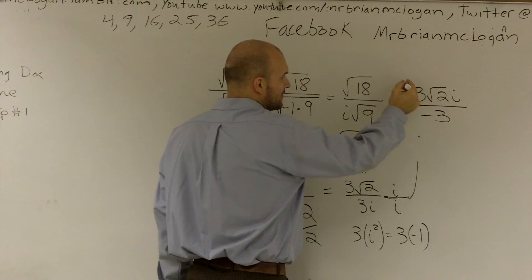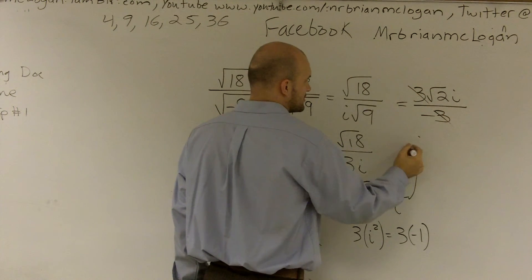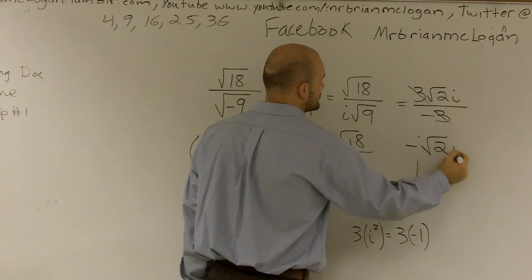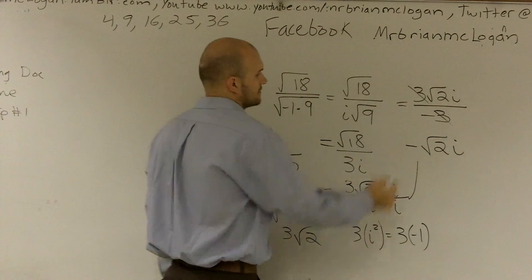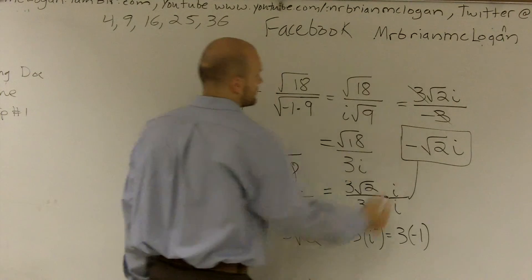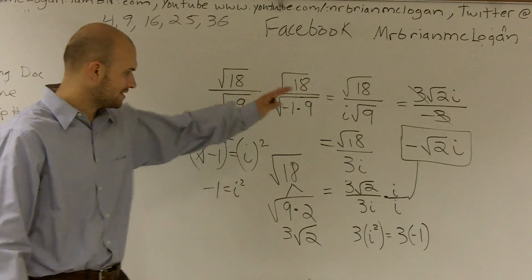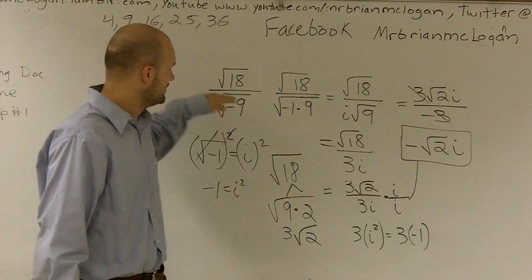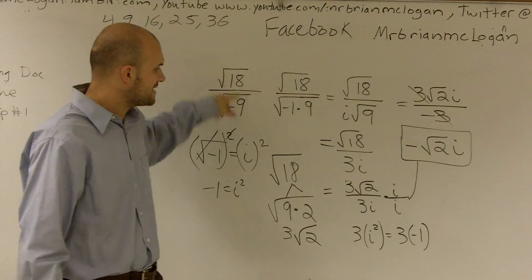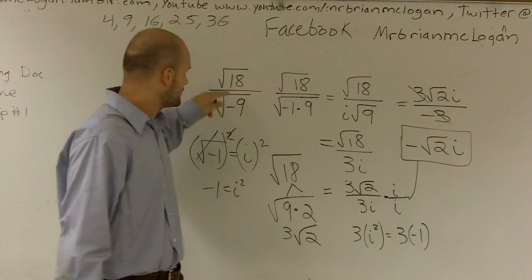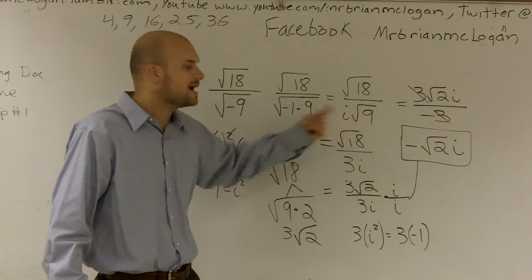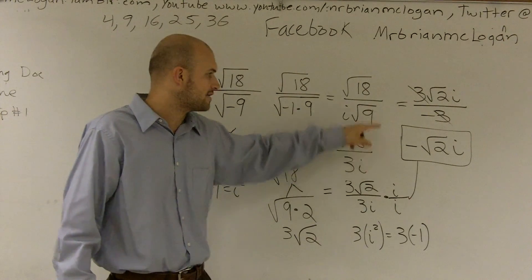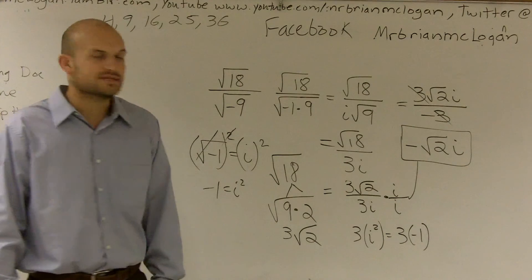And I know that now these two can cancel out to leave me a negative square root of 2i. So I kind of went all over the place. You do have to make sure you simplify your square root of 18. You need to make sure you transfer the square root of negative 9 to 3i. And then you also need to make sure you multiply your i over i to simplify your problem.